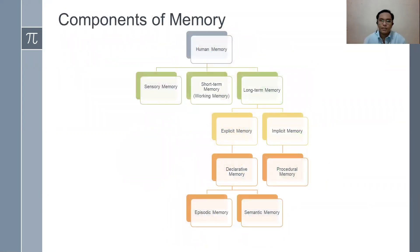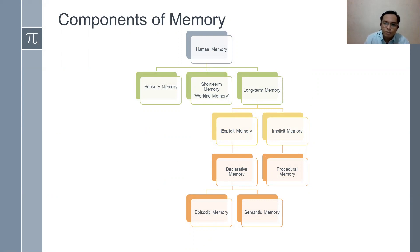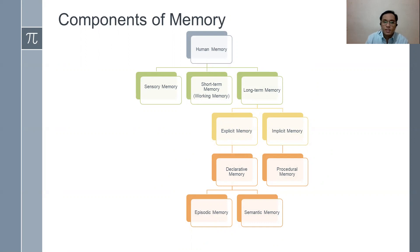So the components of memory — there are different models of memory, but the one used here is the multi-level graph of memory. Human memory is composed of sensory memory, which is the shortest span of memory, then short-term memory, working memory, and long-term memory.